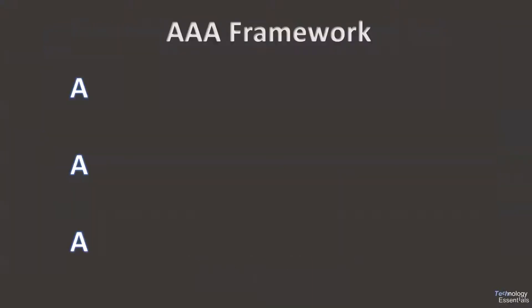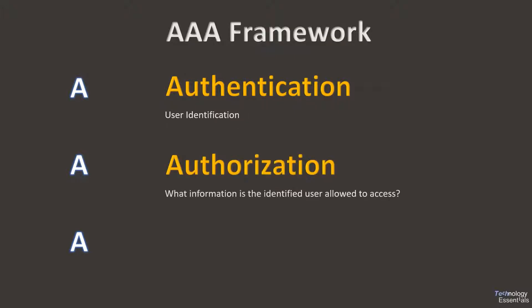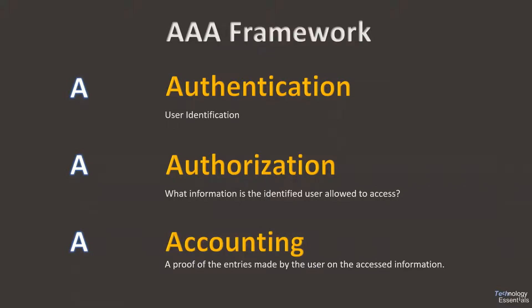The first A stands for authentication, or user identification. The second A stands for authorization, or what information the identified user is allowed to access. The third A stands for accounting — we need a proof of the entries made by the user on the accessed information.